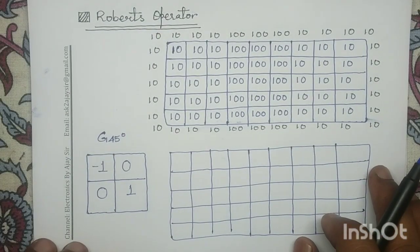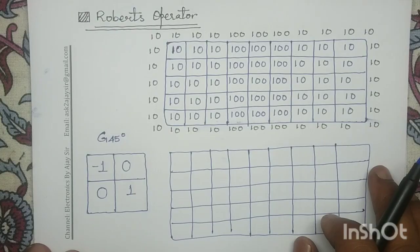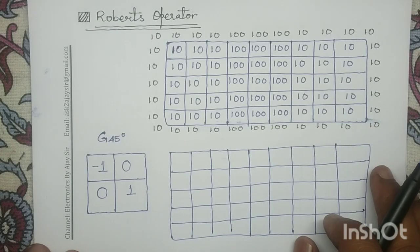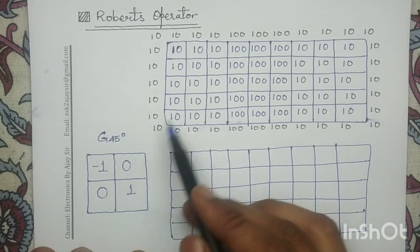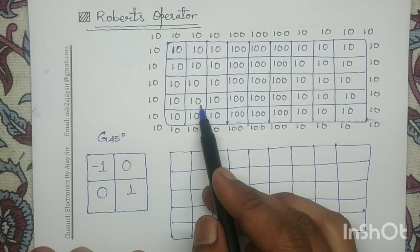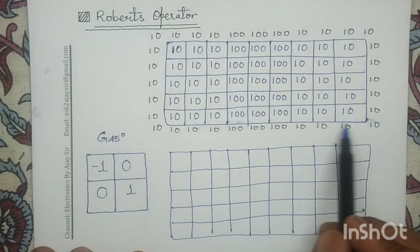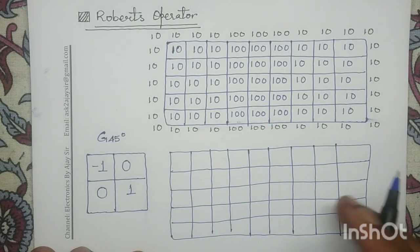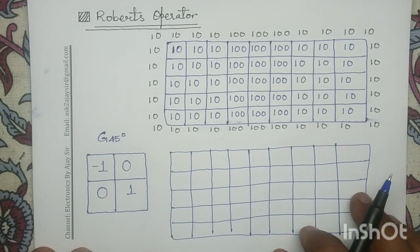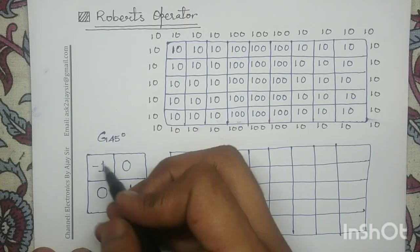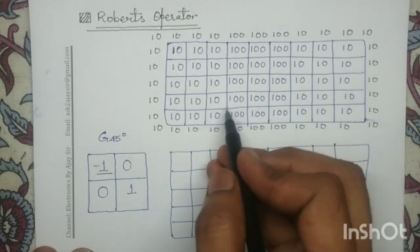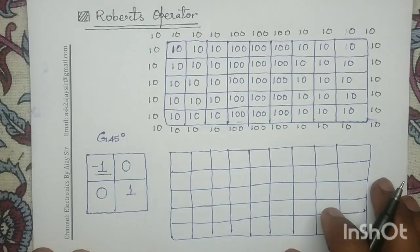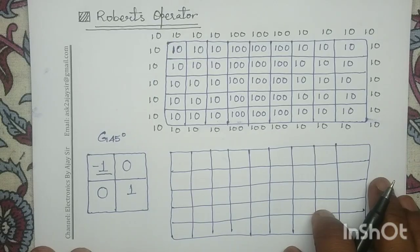First, we will apply the Roberts plus 45 degree mask. In order to apply this mask on the given input image, we first extend the image with boundary pixel values. Next, the center of this mask will be placed at all the object pixels and we will compute the response.